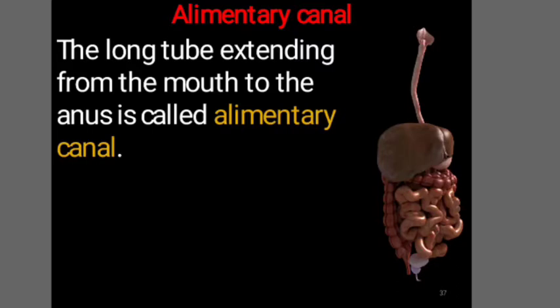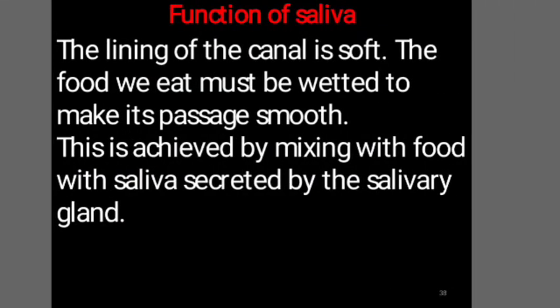Coming to the digestive system of human beings, it has a long alimentary canal. The long tube extending from the mouth to the anus is called the alimentary canal. When food is taken inside the mouth, the teeth and tongue help in chewing the food, and it is mixed with saliva secreted by the salivary gland. The lining of the alimentary canal is soft, and the food must be wetted to make its passage smooth, which is achieved by mixing food with saliva.